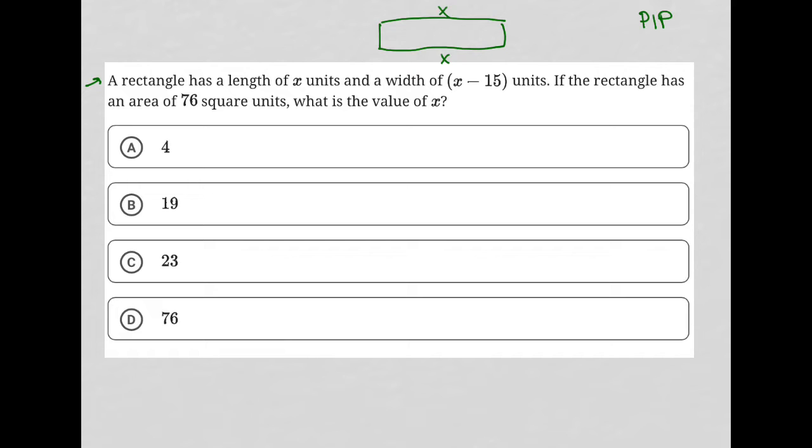The width is x minus 15, so I'll label that as x minus 15 on the right, as well as on the left. If the rectangle has an area of 76 square units, which I'll just write on the inside, what is the value of x?